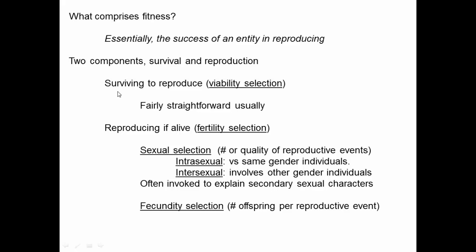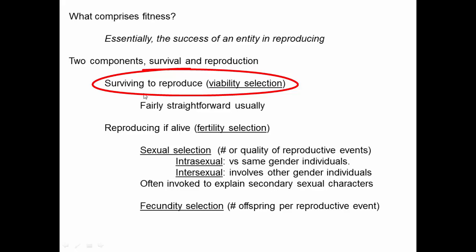Obviously, to reproduce, an organism needs to survive to the point at which it would reproduce. Selection on this ability to survive we term viability selection, and that's often fairly straightforward — for example, the ability to escape predators, resist diseases, and find food.